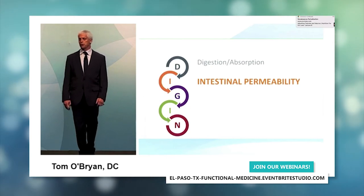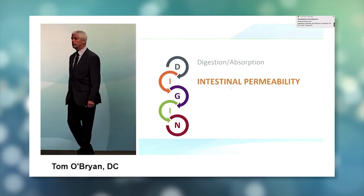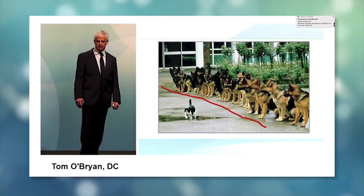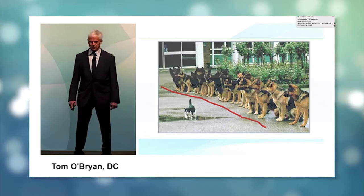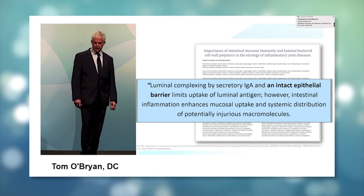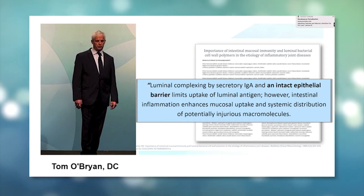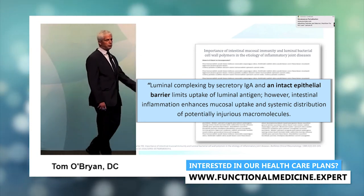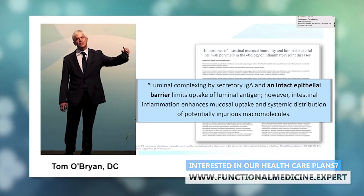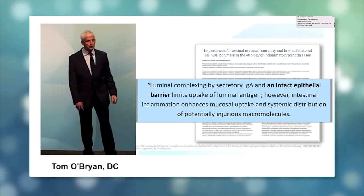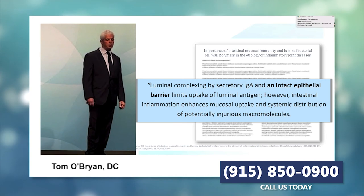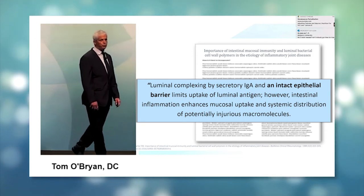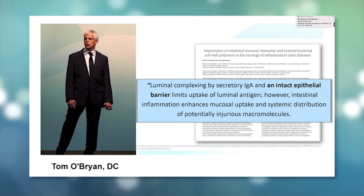What about intestinal permeability? The first I in Dig In is for intestinal permeability. We know that there are a number of imaginary boundaries in the animal kingdom. Also in our guts, there's this boundary. This is an article that came out 30 years ago telling us about the importance of the epithelial boundary in the gut. Luminal complexing by secretory IgA - IgA is secreted, binds onto toxins in the gut and holds onto them to be escorted out. However, intestinal inflammation enhances mucosal uptake and systemic distribution of potentially injurious macromolecules.